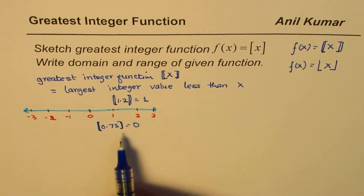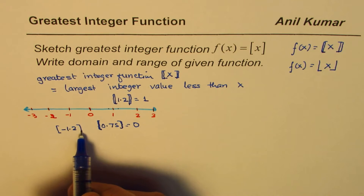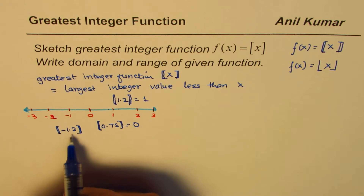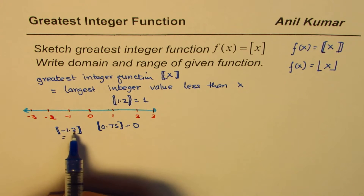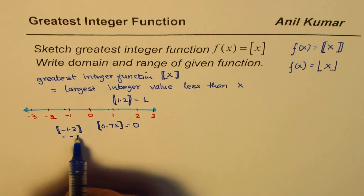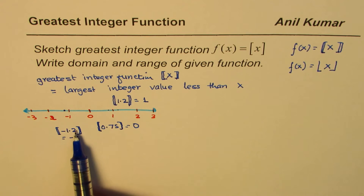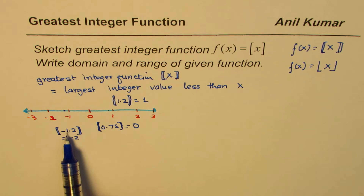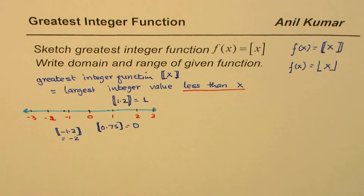Now if I have a value like minus 1.2 and we want to find the greatest integer function — can you tell me the answer? Locate minus 1.2: we are slightly to the left of minus 1, and on the left side we have minus 2. So the greatest integer value of minus 1.2 is minus 2, not minus 1, because minus 1 is actually bigger than this number. We are looking for less than or equal to x.